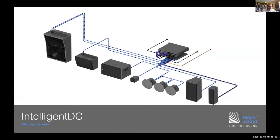John, correct me if I'm wrong — that unit also doesn't have a fan, so it can be used in the house without making any noise? Yes, that's a good point, Merlin — it's a fanless device, so it's really quiet for that reason. Most all of our Intelligent DC products share that family characteristic, and the 48-volt design allows us to do that.